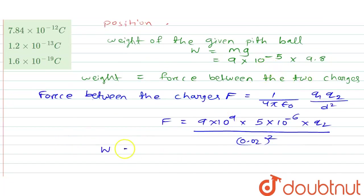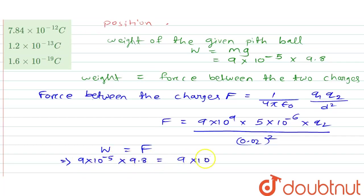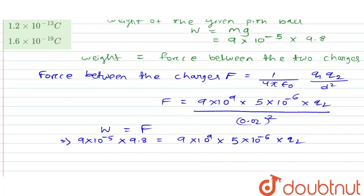Equating W and F: 9×10⁻⁵ × 9.8 = 9×10⁹ × 5×10⁻⁶ × q2 divided by (0.02)².